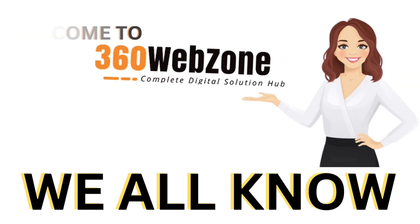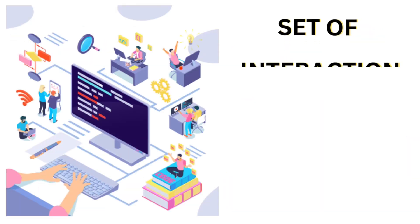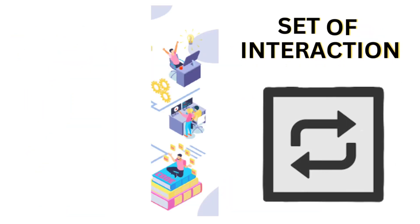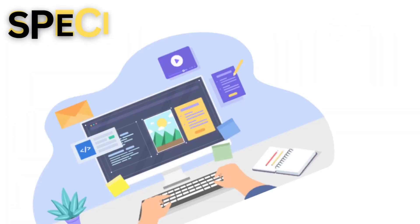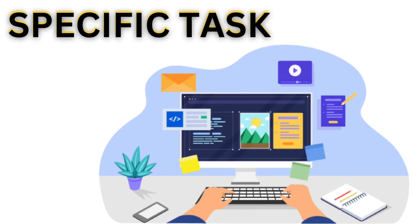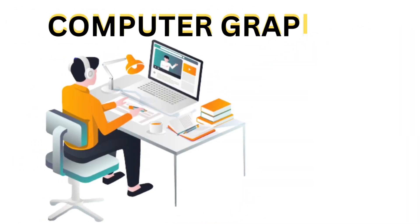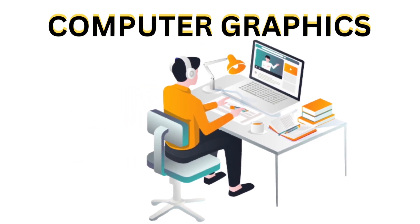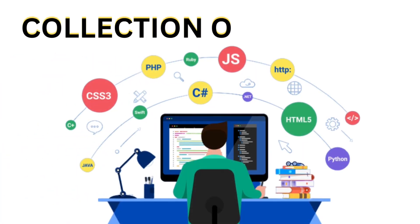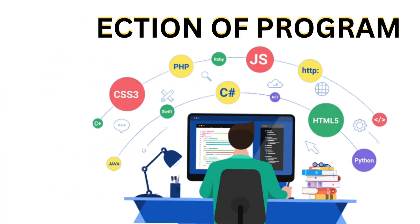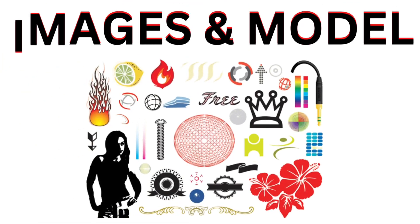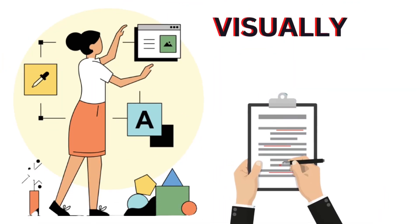We all know that software is a set of instructions which we give computers to perform specific tasks. But in the case of computer graphics, graphic software means a collection of programs where any person can visually edit or manipulate images or models.